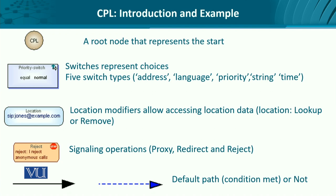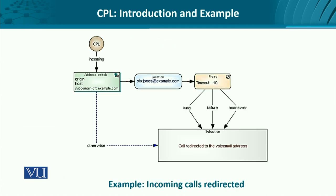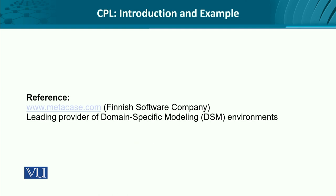In the example that we just saw, that was a redirection example. The continuous bold line represents a condition that is being met, and once the condition is not met, the dotted line applies. This example was taken from metacase.com.